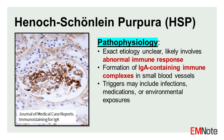Pathogenesis. The exact etiology of HSP remains unclear, but it is believed to involve an abnormal immune response triggered by various factors such as infections, particularly upper respiratory tract infections, medications, or environmental exposures. The resulting formation of IgA-containing immune complexes and their deposition in small blood vessels lead to inflammation and subsequent vasculitic manifestations.